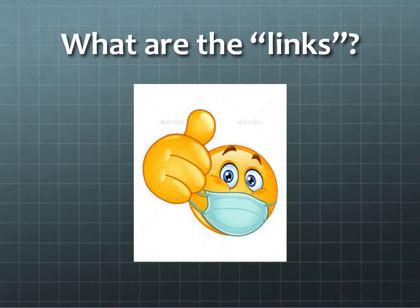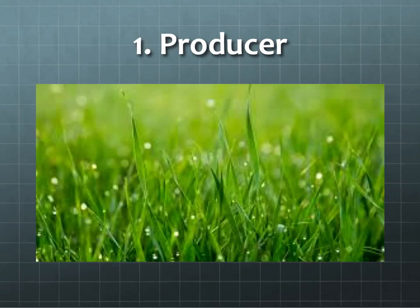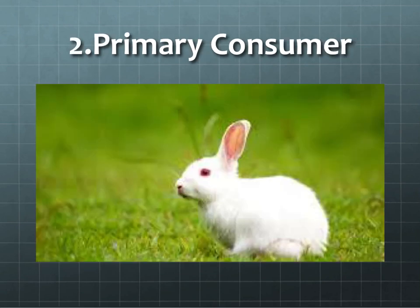So what are the links in the food chain? Number one: the producers. Plants are called producers because they produce their own food. They do this by using light energy from the sun, carbon dioxide from the air, and water from the soil to produce food.